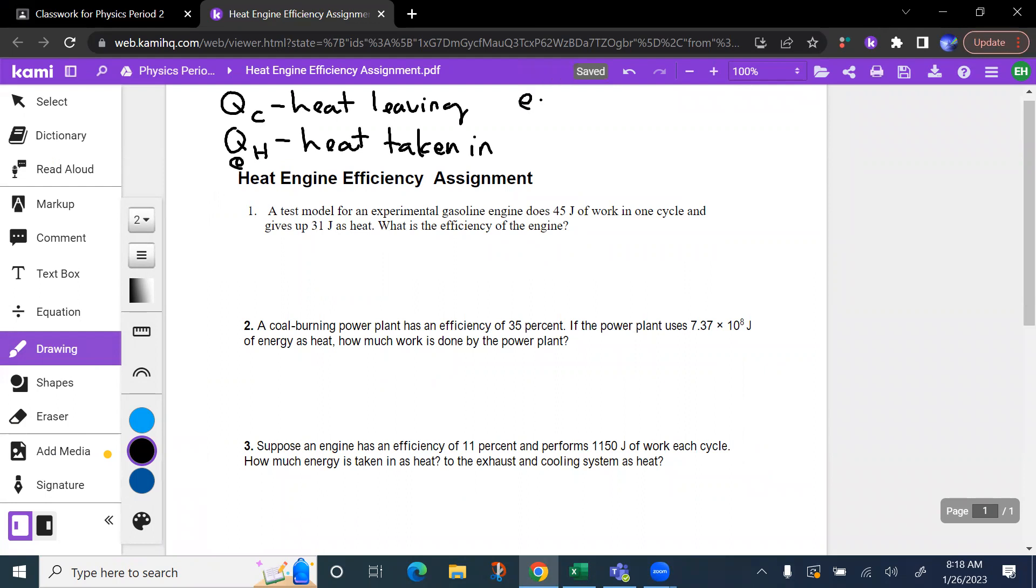Recall the efficiency is equal to the amount of work done, which is the useful energy output of an engine, divided by the total energy it takes in. Now remember, work itself is equal to the heat going in minus the heat going out. And we can divide that over the heat going in. So we can just rewrite that another way. And finally, if you split up Qh into a common denominator and two separate fractions, it could be written as 1 minus Qc over Qh.